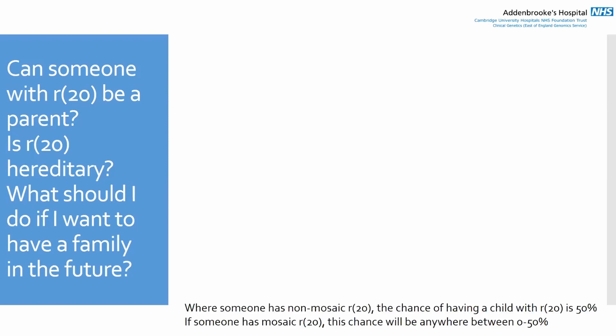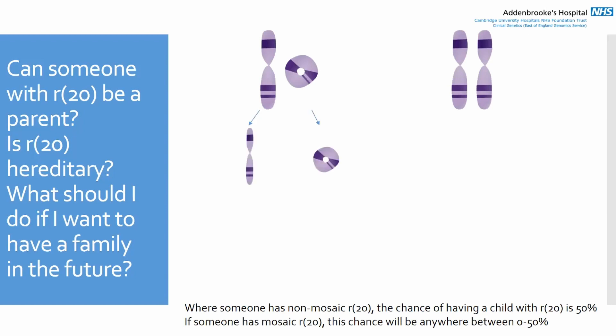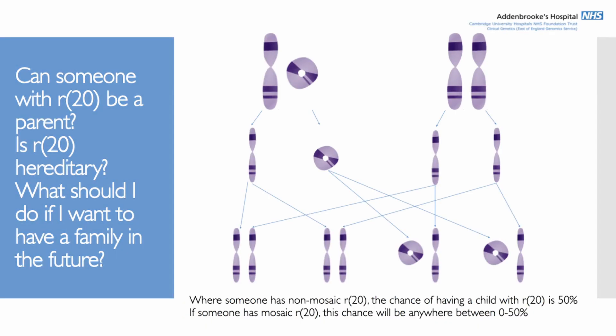If somebody has non-mosaic ring 20 — where ring 20 is present in all of their cells — the chance of them having a child with ring 20 is 50%. That's because assuming their partner has two typical copies of chromosome 20, each person puts one chromosome into their egg or sperm cell. The person with ring 20 will either pass on their typical copy or their ring copy of chromosome 20. There are four possible combinations, and in one of those the ring copy is passed on — giving that 50% figure.